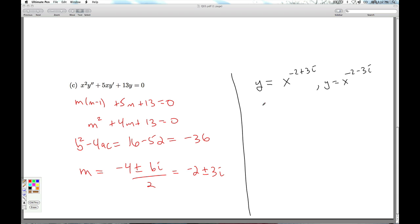Well, we look at x, say, to the 3i as e to the 3i natural log x, and then we use Euler's formula to break it down for us. And so we get for our final answer then, once you go through all the steps, you get x to the minus 2, that's the real part of the answer there, times c1 cosine 3 natural log x plus c2 sine 3 natural log x.